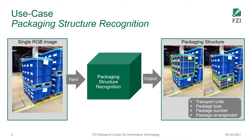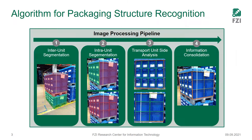To give you a short motivation and introduction into our use case, I want to talk about Package Infrastructure Recognition. Package Infrastructure Recognition means we take a single RGB image showing one or more logistic transport units and try to infer the packaging structure of these units. To follow that task, we have defined an algorithm and image processing pipeline, which I want to run you through shortly.